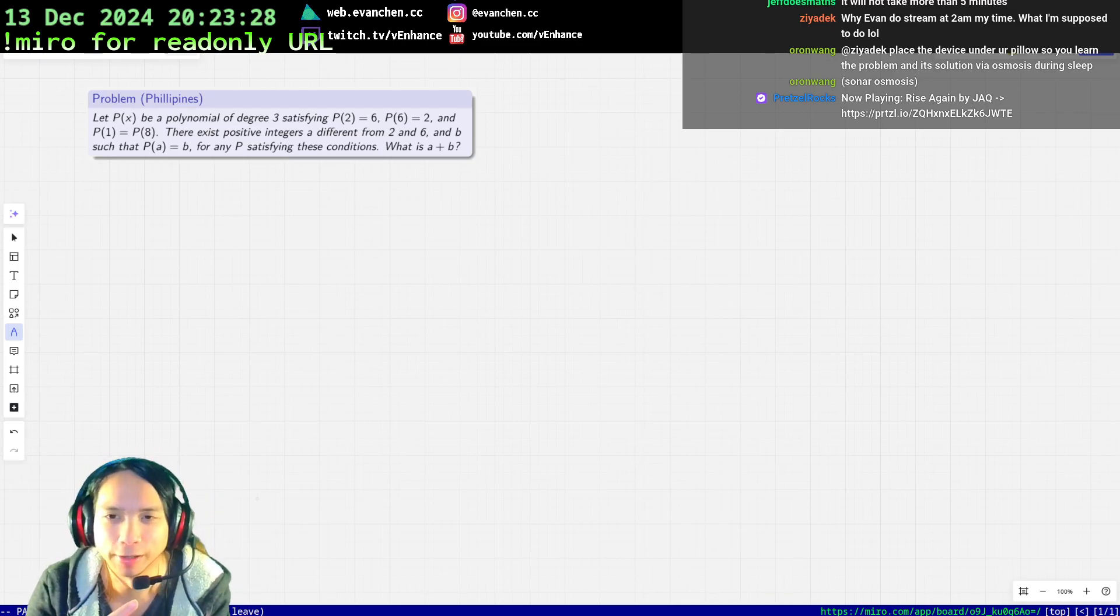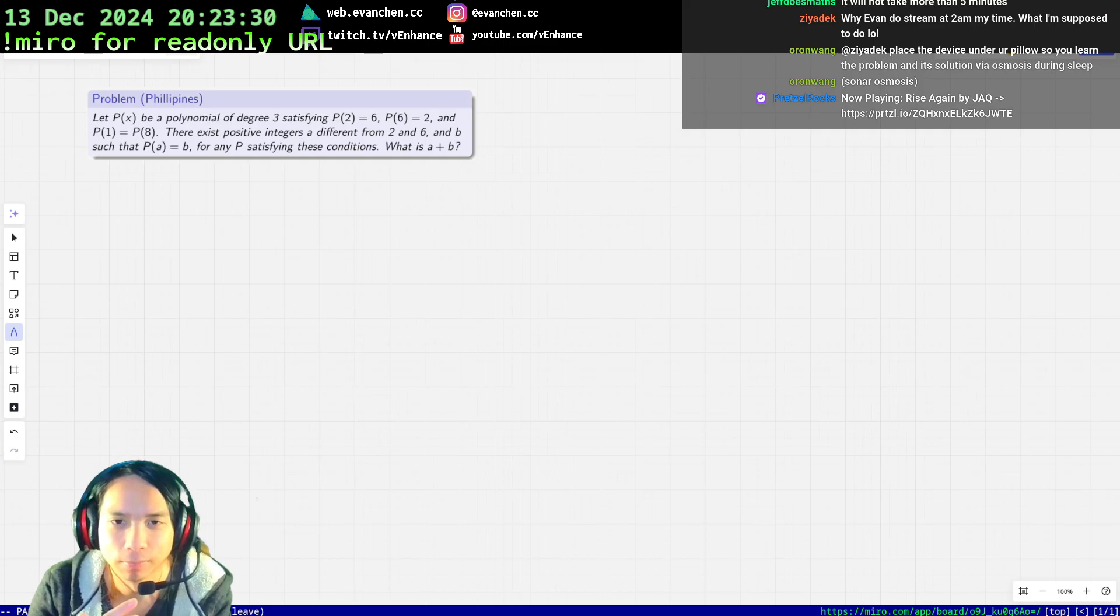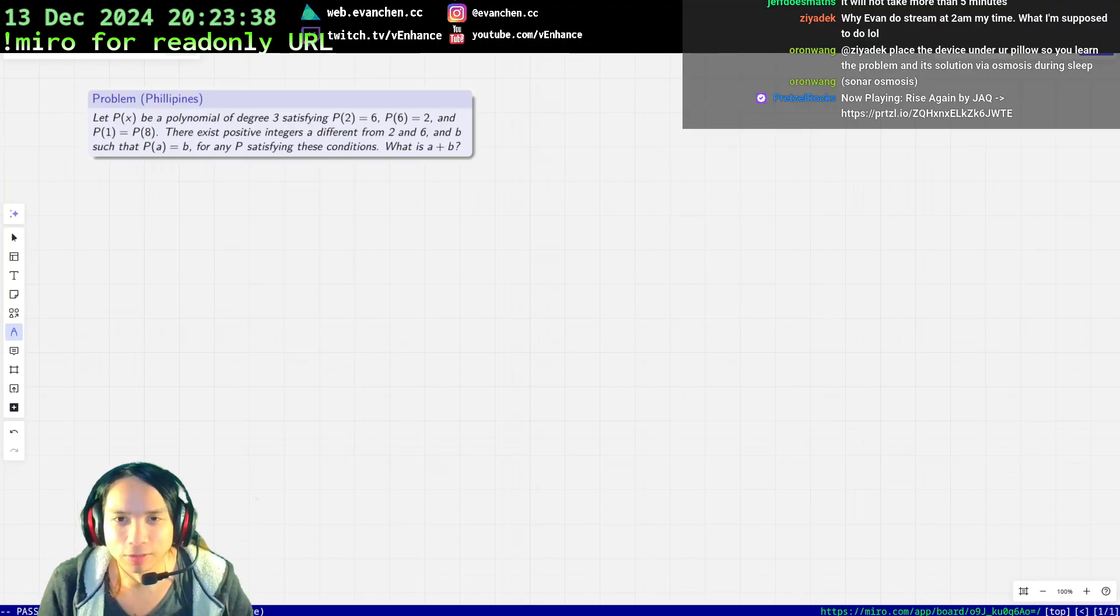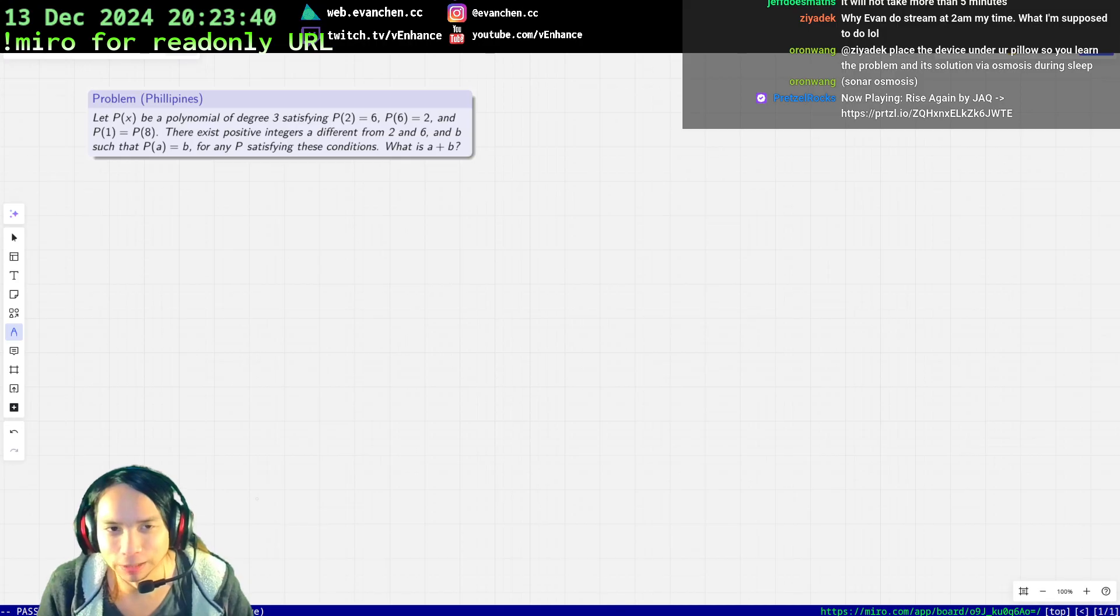Okay, welcome back everyone. We have a problem from the Philippines Olympiad. There's an extra degree of freedom where P(2) is 6, P(6) is 2, and P(1) is P(8).